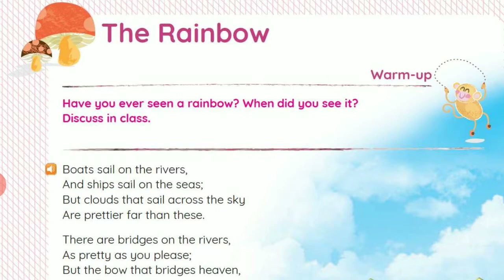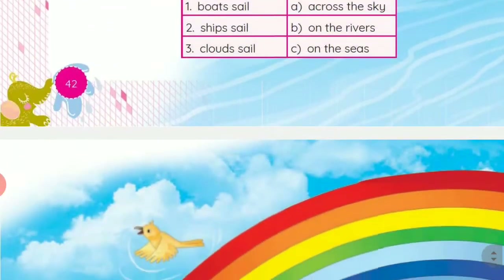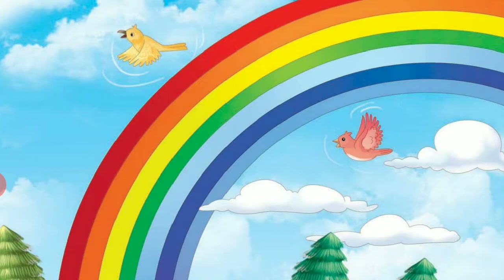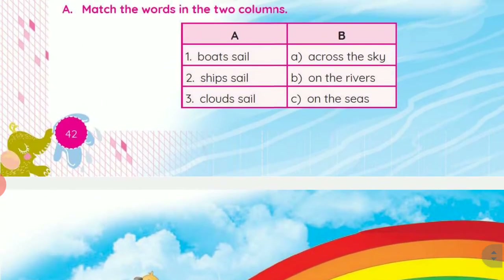Now children, tell me — have you seen a rainbow? Yes, if you have seen it, where have you seen it? Yes, children, we can see it in the rainy season and in the sky. There are seven colors in it. This is the rainbow, and in it there are seven colors: first violet, then indigo, blue, green, yellow, orange, red. Its short form is VIBGYOR — you will remember VIBGYOR. And it looks like a bridge.